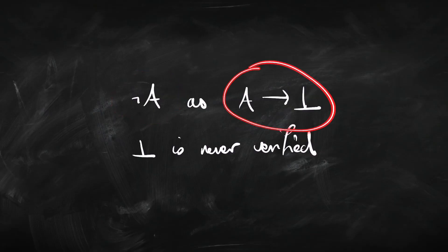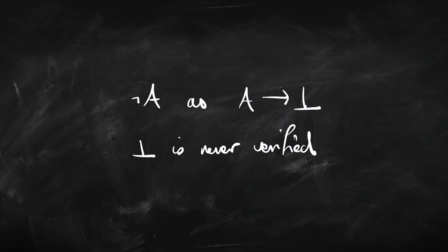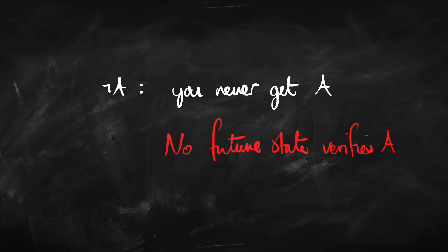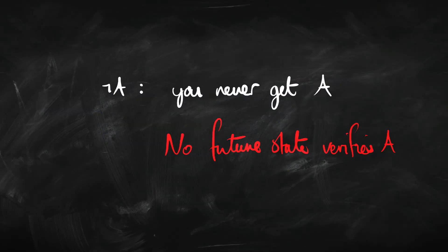What about negation — not-A? We can define not-A as A arrow falsum. So we need to know when falsum is verified in these models. Simple answer: never. There's no state where falsum is verified, because falsum is the thing that is impossible to prove or verify. So not-A means: everywhere that A is verified, this impossible thing is also verified — which is nowhere. In other words, not-A means A is never verified. At all states reachable in the future, plus the current state, you don't find A. So not-A is a bit simpler than "if A then B" — it just means you never discover A going further in the investigation.